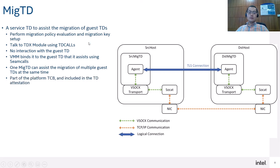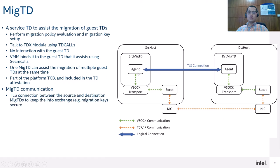The last thing about micro TD is that it's a part of the platform TCB, so it's included in the TD attestation. As the micro TD on the source side and destination side needs to exchange sensitive information like the migration key, the key needs to be securely transferred. We establish a TLS connection between the source and destination side micro TDs.